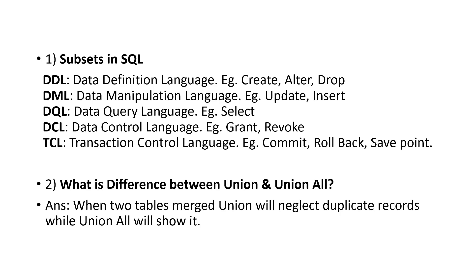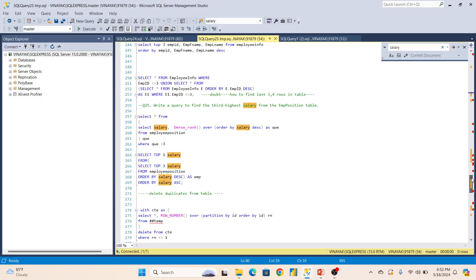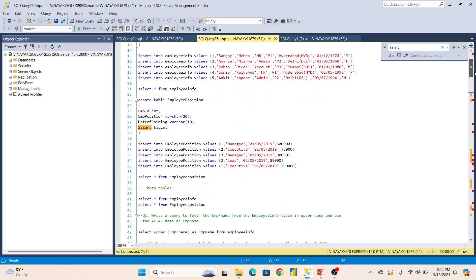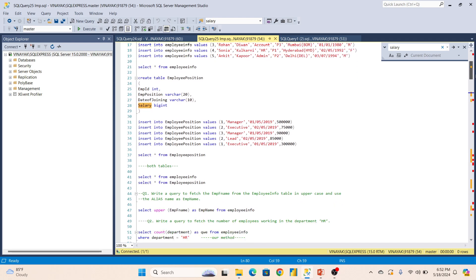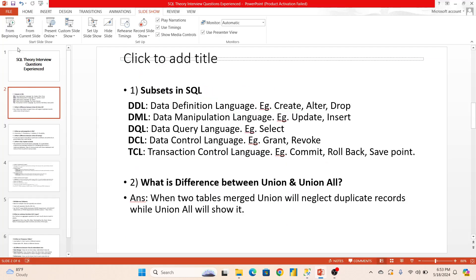While answering this question, first tell them there are 5 types and the first is DDL. Then expand it — DDL stands for Data Definition Language. Commands under DDL include CREATE, ALTER, and DROP — things like creating a table or dropping a table. These all fall under DDL commands.